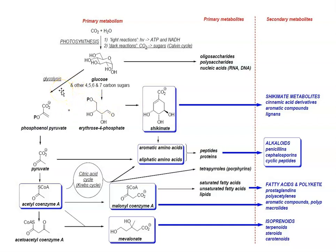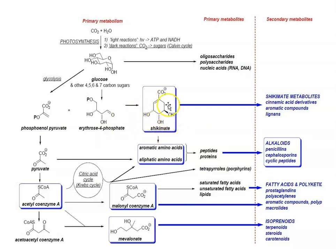Through glycolysis, glucose is converted into pyruvate. Glycolysis is the process in which glucose is broken down to produce energy and to form pyruvate through phosphoenolpyruvate. This phosphoenolpyruvate, when it reacts with erythrose-4-phosphate, produces shikimate. Shikimate is a very important precursor for a large number of secondary metabolites. Secondary metabolites derived from shikimate through the shikimate pathway include cinnamic acid derivatives, aromatic compounds, lignins, etc.